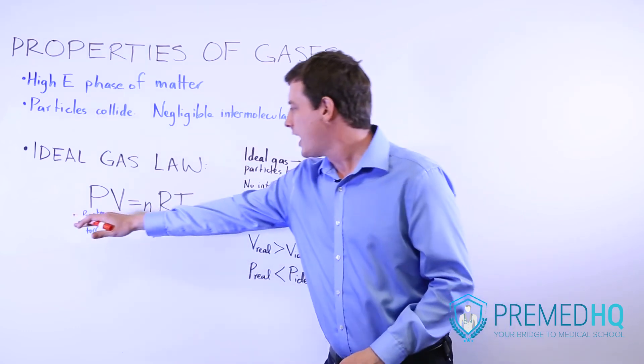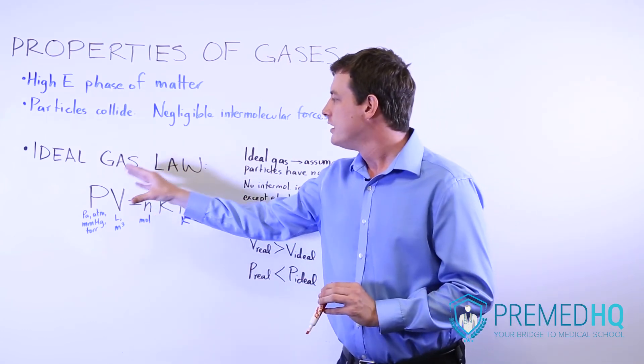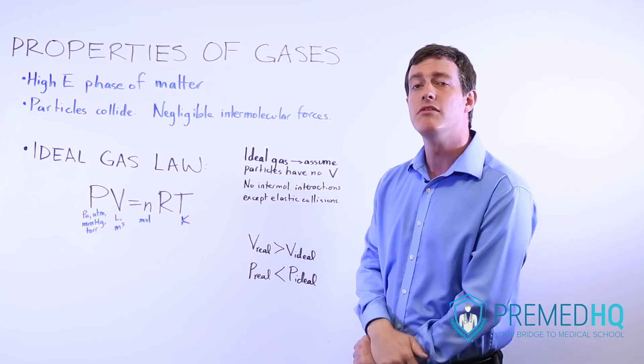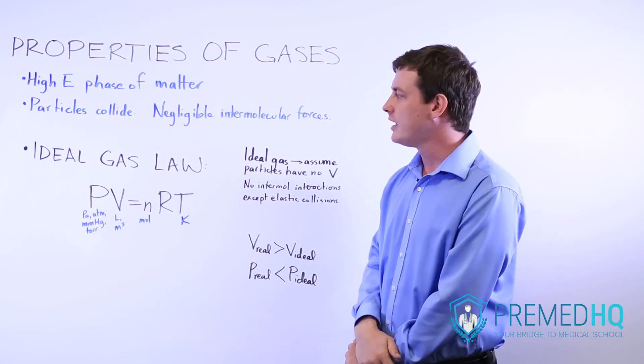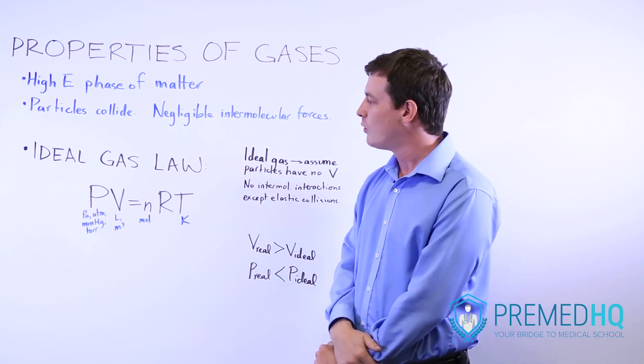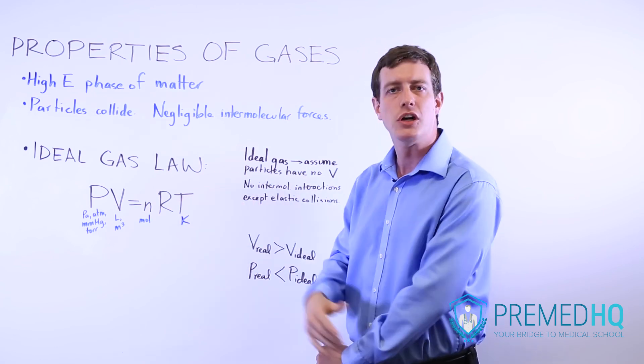And once you have established that PV equals nRT, we can go through a lot of different manifestations of this formula that you'll see and can be very useful in analyzing problems that come up that involve gases and their quantities of volume, pressure, number of moles, temperature, and so on.